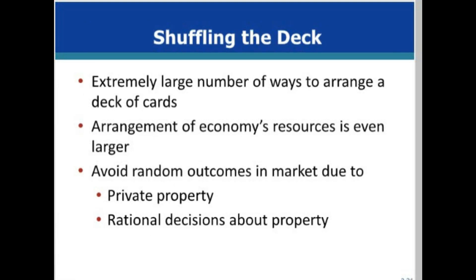Shuffling the deck illustrates how many different arrangements can be obtained with 52 items like a deck of cards, and then how many different arrangements could be made with the vast number of resources available to make goods and services. The number of possible ways to arrange a deck of cards is so large that it is incomprehensible — imagine the number of ways to allocate resources. The reason we do not have random outcomes is because of private property and people's abilities to make decisions about their own property that will make themselves better off, not worse off.